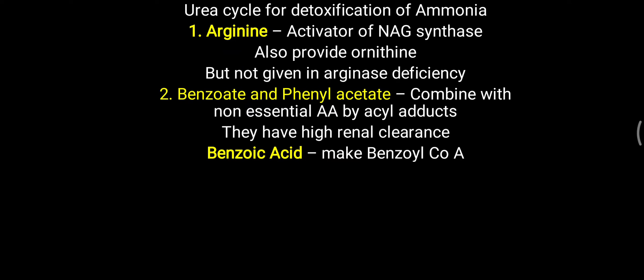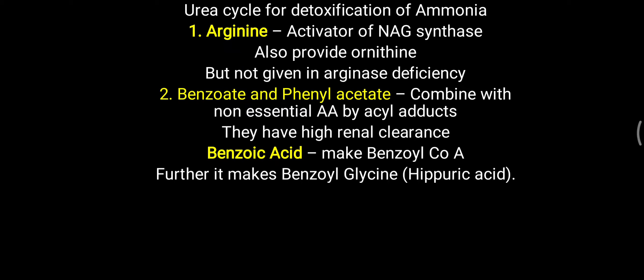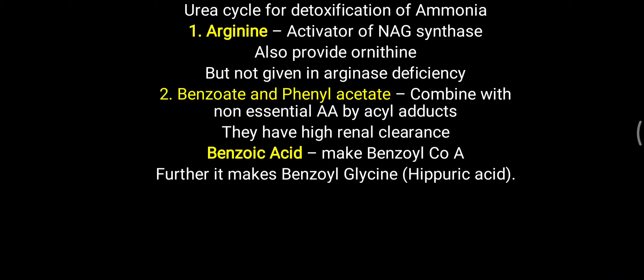Benzoic acid is converted to benzoyl-CoA, which then combines with glycine to form benzoylglycine, also called hippuric acid. Glycine is a non-essential amino acid with one amino group; since glycine can be resynthesized in the body, its excretion is not a problem. Benzoylglycine is excreted, effectively removing ammonia in the form of glycine — one mole of benzoic acid removes one mole of ammonia.